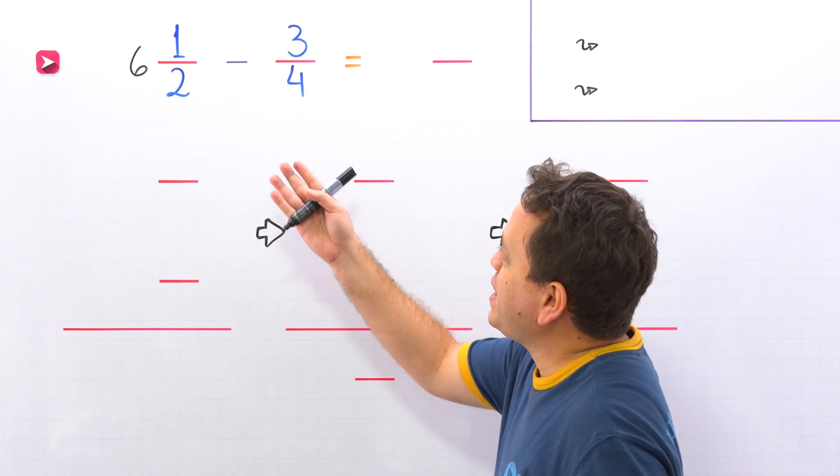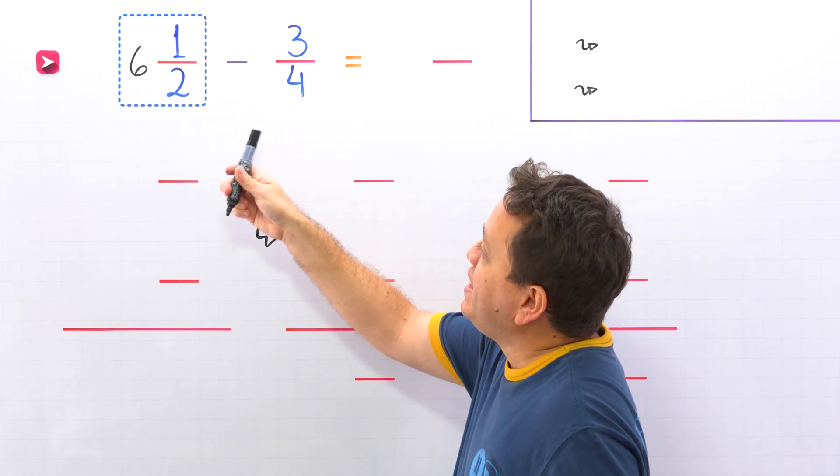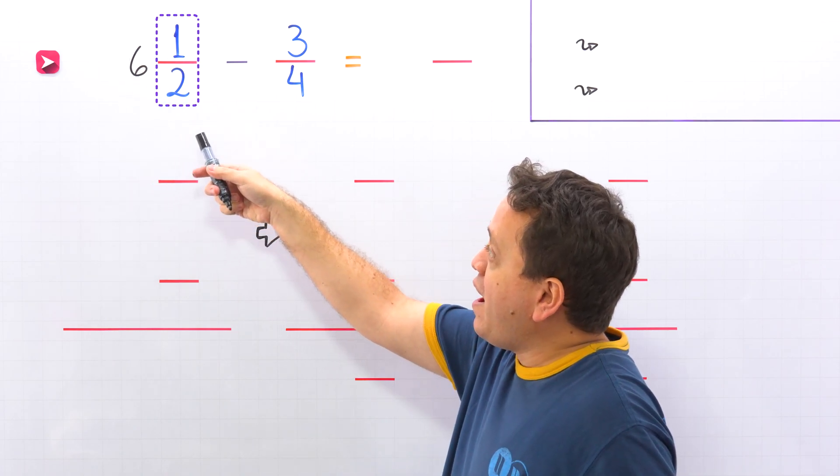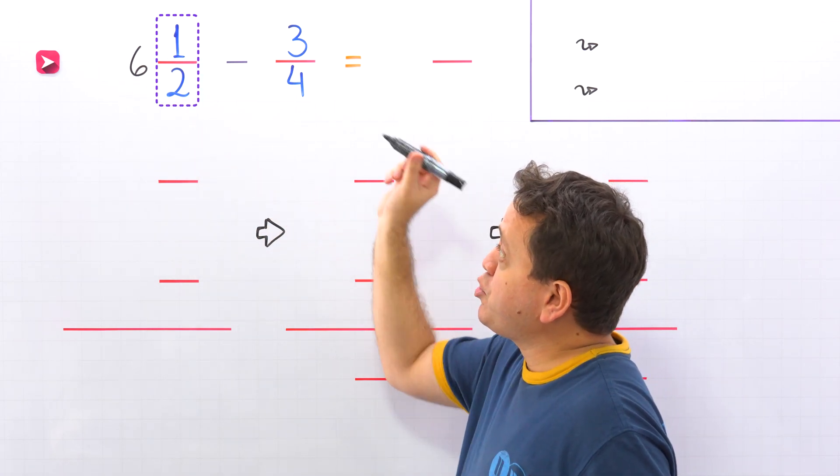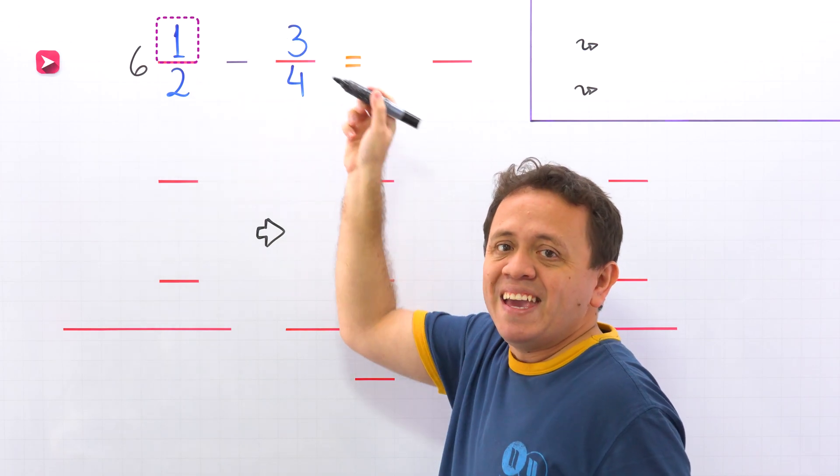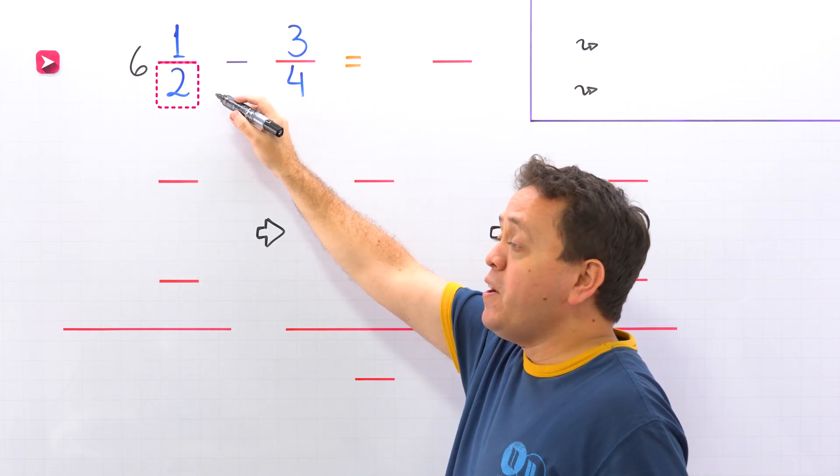Before getting into it, don't forget that a mixed number, like this one, is the sum of a whole number and a proper fraction. Also, a proper fraction is a fraction where the numerator, the top number, is less than the denominator, the bottom number.